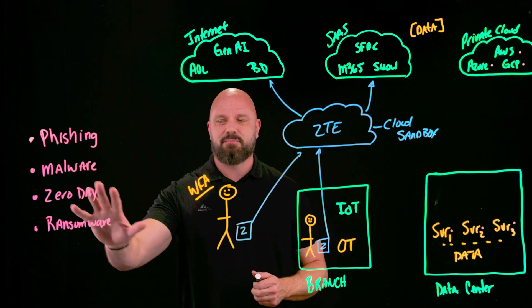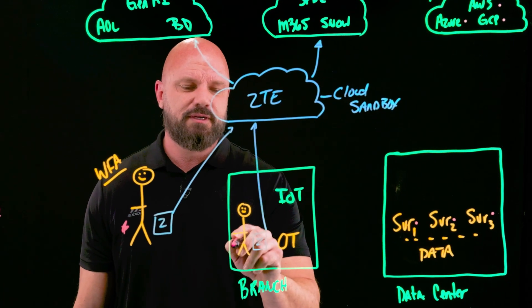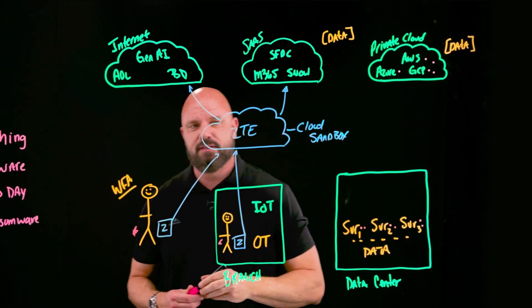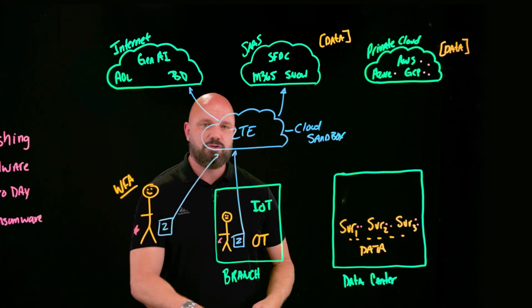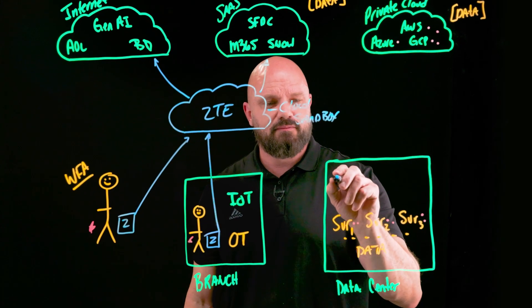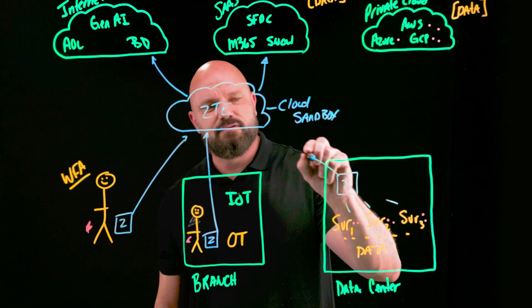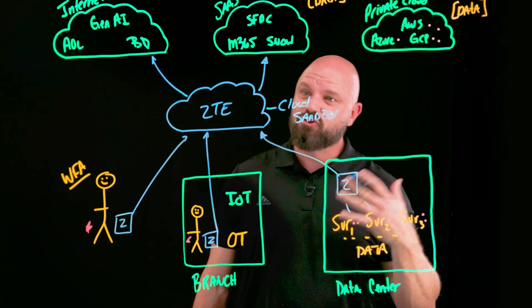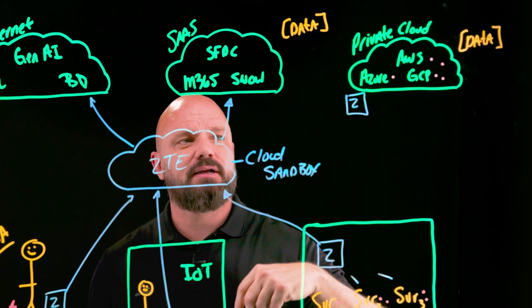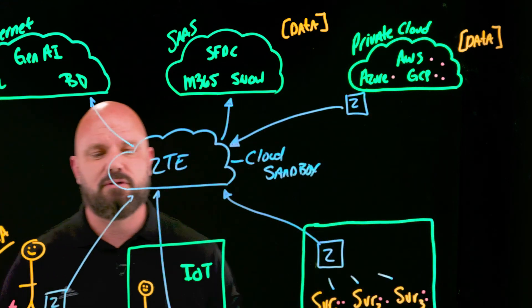When we're talking about ransomware, it could be running on an end user's endpoint, or even on servers in your private cloud. Our goal is to always leverage the cloud sandbox to prevent that. Any traffic originating from those environments gets sent through the Zero Trust Exchange, because Zero Trust means we don't trust anything whatsoever. The Zscaler Cloud Connector sends all that traffic directly to the Zero Trust Exchange and protects those workloads.